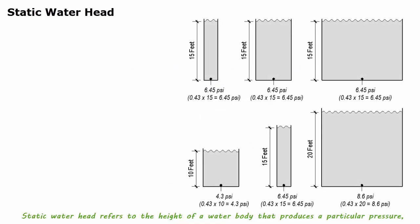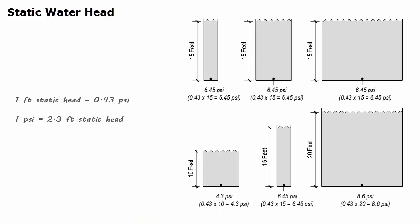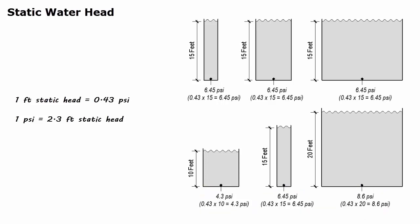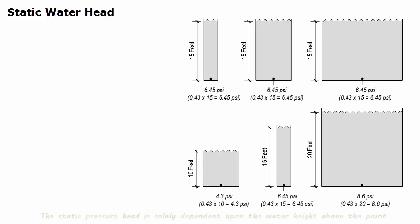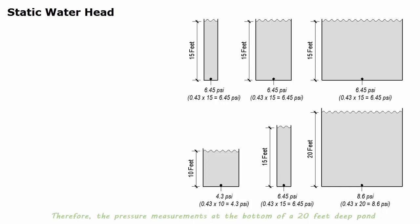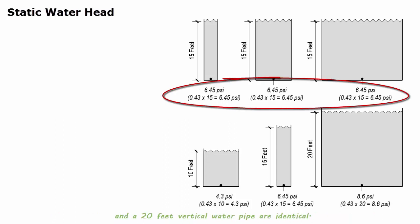Static water head refers to the height of a water body that produces a particular pressure, expressed in pounds per square inch (psi), at the bottom of that water body. 1 ft of static head is equal to 0.43 psi, or 1 psi is equal to 2.3 ft of static head. The static pressure head is solely dependent upon the water height above the point where the measurement is taken. Therefore, the pressure measurements at the bottom of a 20 ft deep pond and a 20 ft vertical water pipe are identical.